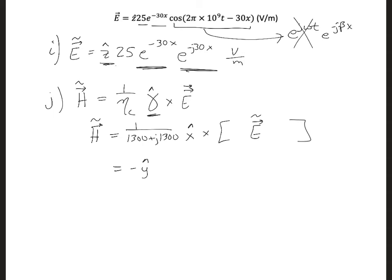Then if we take the amplitude, 25, and divide by this 1,300 plus j 1,300, it's easier to perform that division if we convert this to a magnitude and a phase. So if we take, we can calculate the magnitude using 1,300 squared plus 1,300 squared, take the square root of that, and we get 1,838.5.